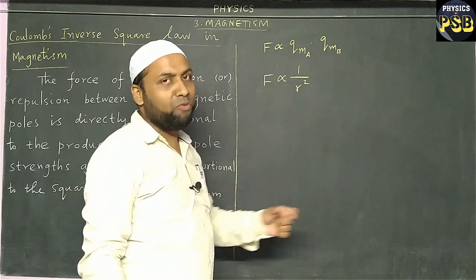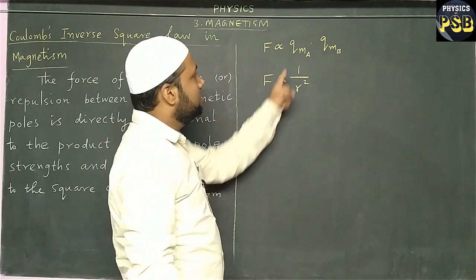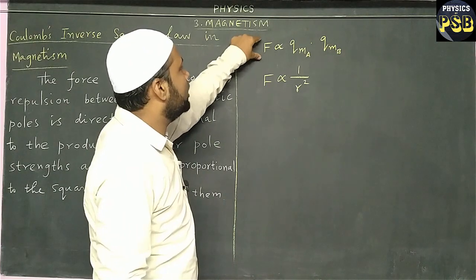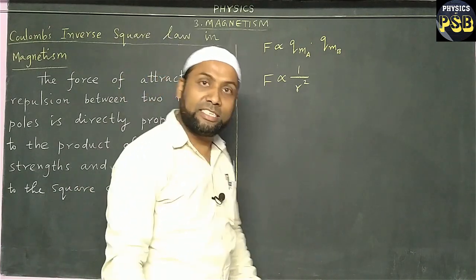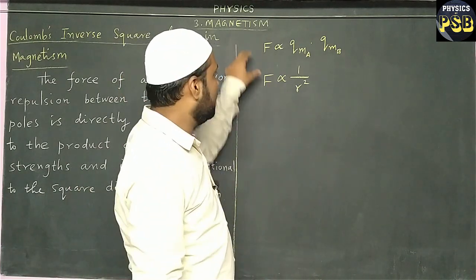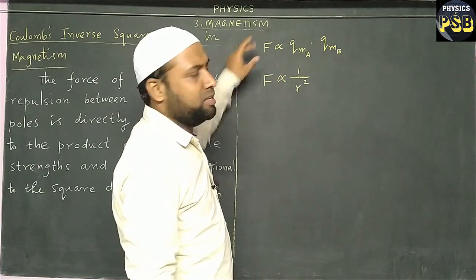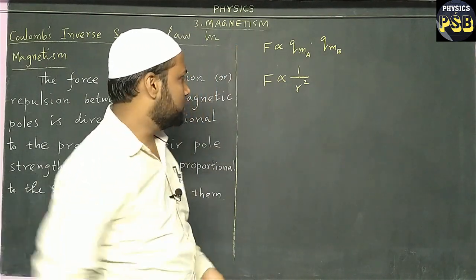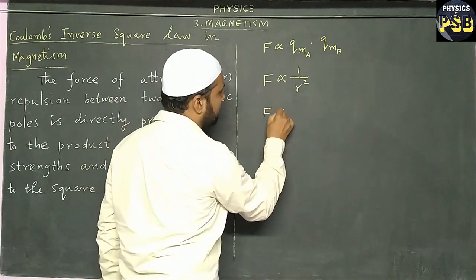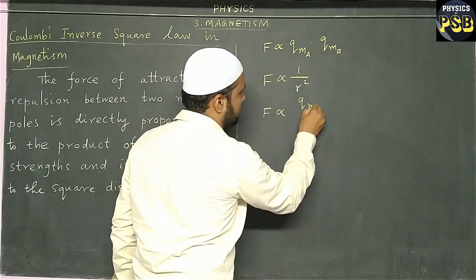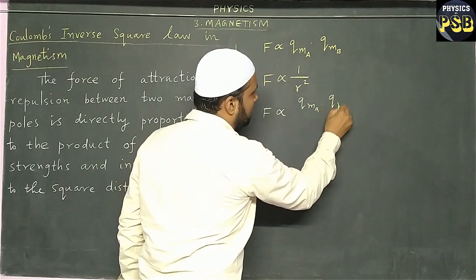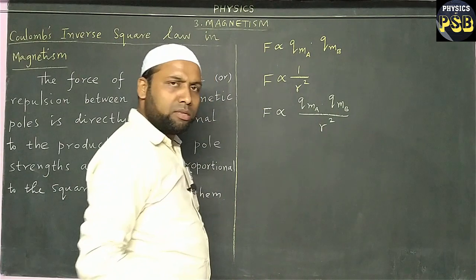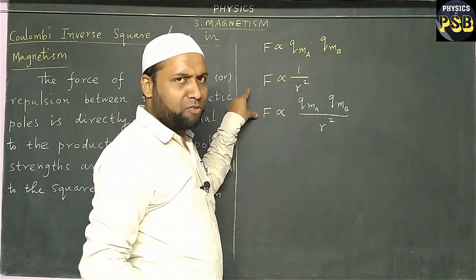If you observe these two expressions, you find the same term is present on the left-hand side. So, I combine them to get a new expression, which is written this way: q_m,a dot q_m,b upon r square. This is a common expression we obtain.